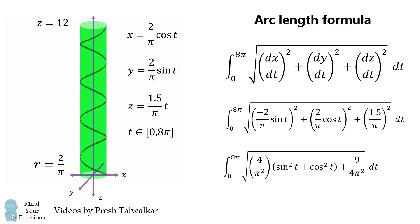From here, sine squared of t plus cosine squared of t equals 1. We thus simplify further and we get the following integral. To evaluate it, we take 5 over 2π multiplied by 8π, which simplifies to be 20. And that's our answer.